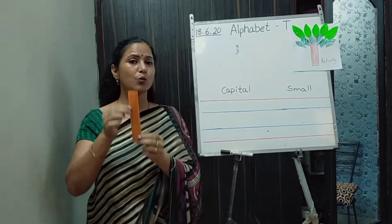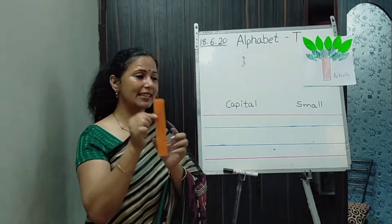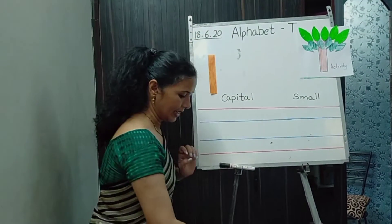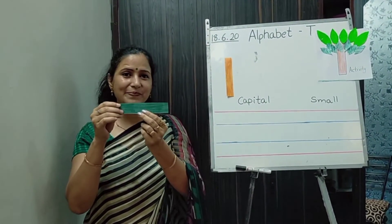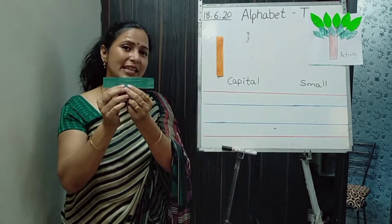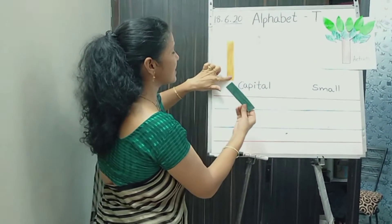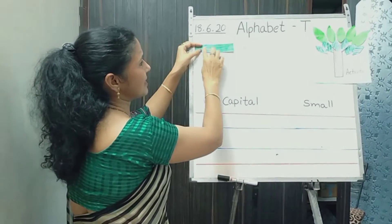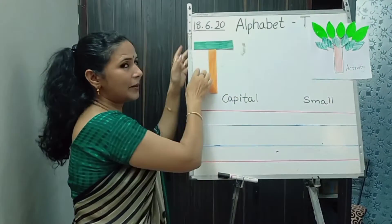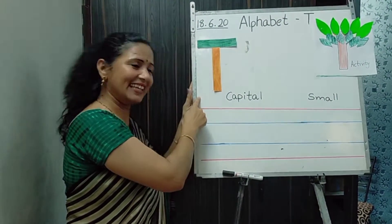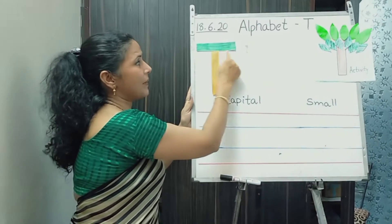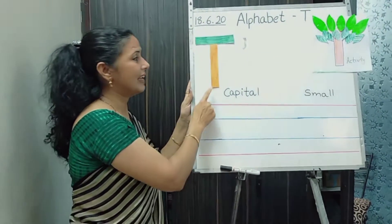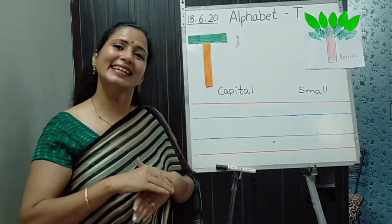Tell me which line is this? Yes, this is standing line. And which line is this? Yes, this is slipping line. So, when we place a slipping line on top of the standing line like this, it becomes letter T. Slipping line attached with standing line — it becomes letter T.